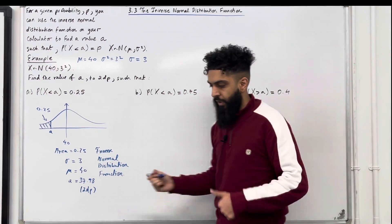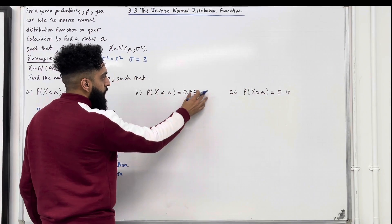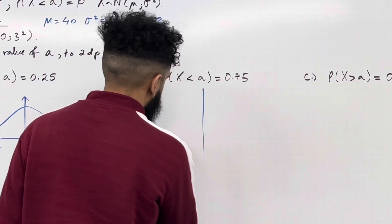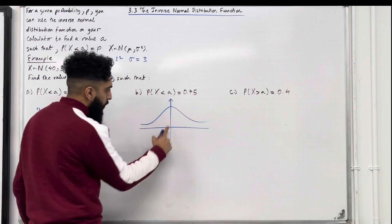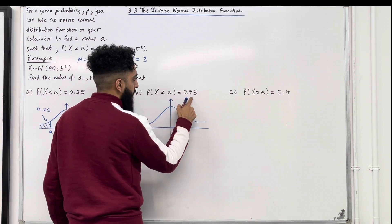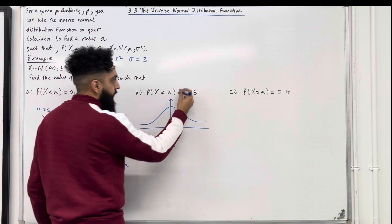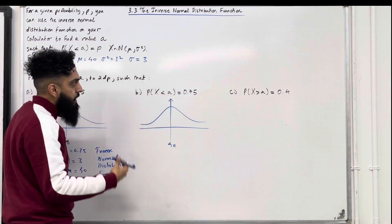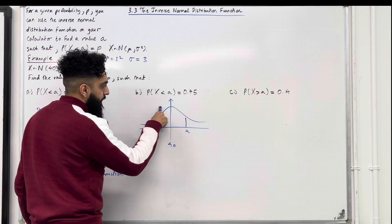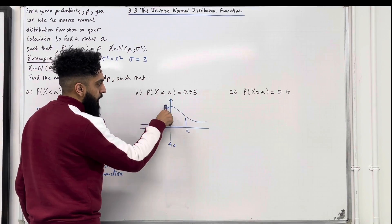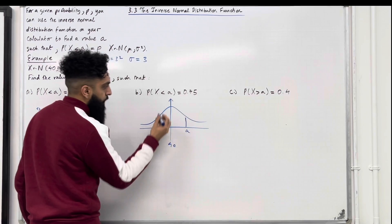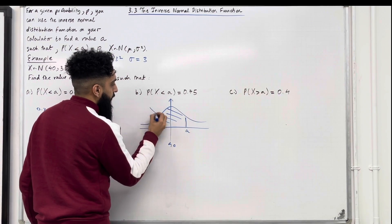Let's have a look at Part B. In Part B, we've got probability X is less than A is equal to 0.75. I'm going to illustrate A and 0.75 on a bell-shaped curve. Here is my bell-shaped curve, centred at the mean mu, which is 40. Probability X is less than A is equal to 0.75, which means the area to the left of A is 0.75 — a somewhat large area. This time we're going to position A somewhere to the right. We know the area to the left of centre is 0.5, and since 0.75 is greater than 0.5, A must be positioned to the right of the mean.